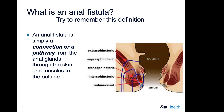Just one final slide to review the definition of the anal fistula, because it's so important to understand when facing this surgery. An anal fistula is simply a connection or pathway from the anal glands through the skin and muscles to the outside. There are a number of different types of fistulas: submucosal, intersphincteric, transsphincteric, suprasphincteric, and extrasphincteric. The main ones we're going to talk about today are the intersphincteric and transsphincteric fistulas.